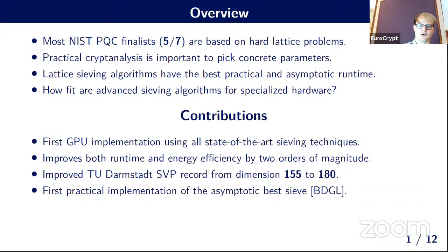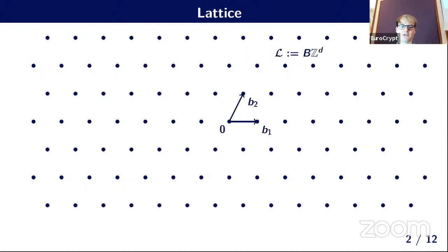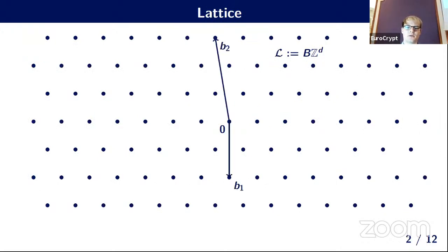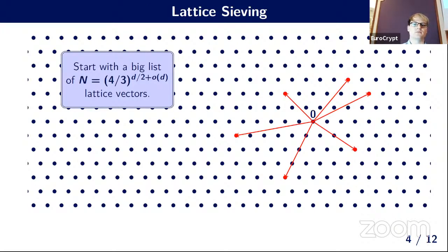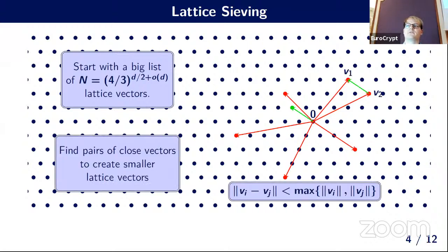A lattice is a discrete additive group generated by some basis. The Shortest Vector Problem (SVP) asks to find the shortest non-zero lattice vector. Lattice sieving solves this by starting with a large list of relatively long vectors, finding pairs of close vectors whose difference gives a shorter vector, replacing the longer vector with the shorter one, and repeating until only very short vectors remain.